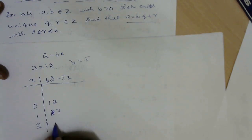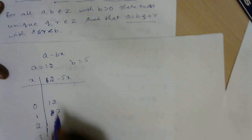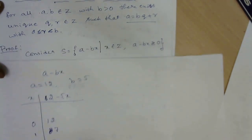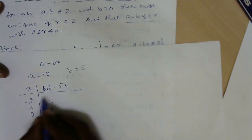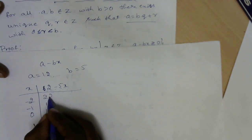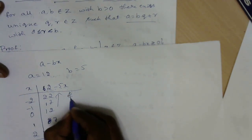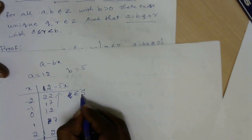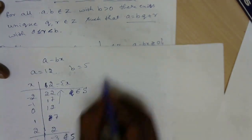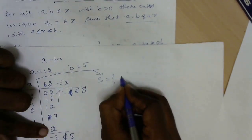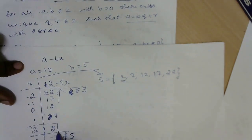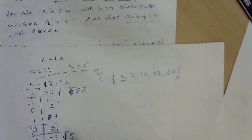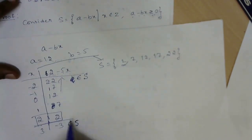If I put x equals 2, it gives 2. For x equals minus 1, this becomes 17. For x equals minus 2, minus times minus is plus, so you get 22. So the set S contains elements: 2, 7, 12, 17, 22 and so on — only non-negative values belong to S.